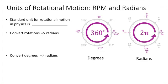All right, one last note about rotational motion, and that is units. It's very important that when solving rotational motion problems, we're using the correct units for rotational motion, and they're a bit different than what you might be used to. The standard unit for rotational motion in physics is the radian.